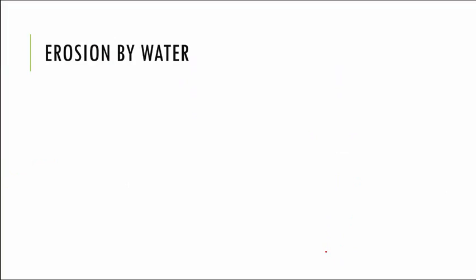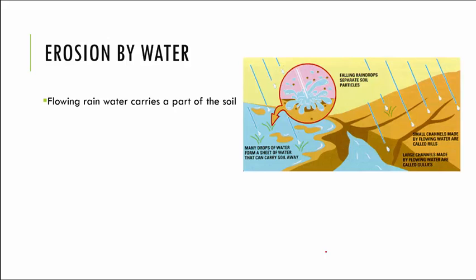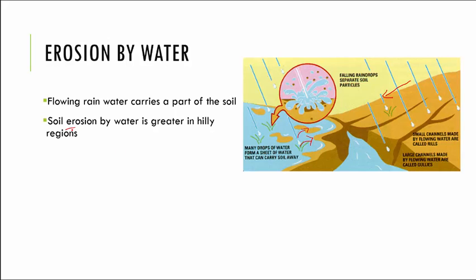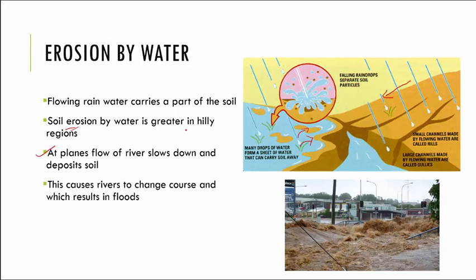The first cause is erosion by water. As rainwater flows on land, it takes a part of soil with it, resulting in soil erosion. Soil erosion by water is greater in hilly areas because water flowing downhill gains speed and pulls more and more soil with it. Whereas in plains, the flow of river slows down and deposits the collected soil. Over the years, when these deposits increase, rivers change their course, which can result in floods and heavy loss of life as well as property.